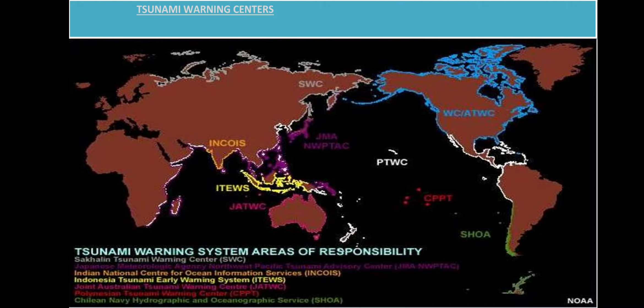Here we see the tsunami warning centers all over the world. In India we have INCOIS, and near the Pacific Ocean there is ITEWS — the Indonesia Tsunami Early Warning System. We also have the Joint Australian Tsunami Warning Center (JATWC) and the Navy Hydrographic and Oceanic Service near China. There are many tsunami warning systems all over the world.